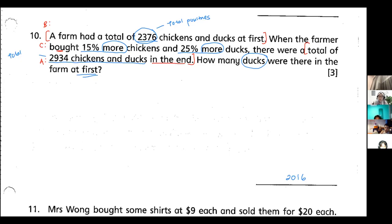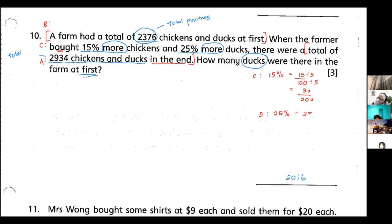We need to convert all the percentages into fractions so we can work easily with units. For chickens: 15% = 15/100, reduced by dividing by 5 twice, gives 3/20 in simplest form. For ducks: 25% = 25/100, divided by 5 gives 5/20, which further reduces to 1/4. All percentages have now been converted into unit fractions.